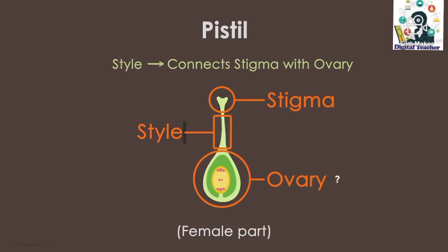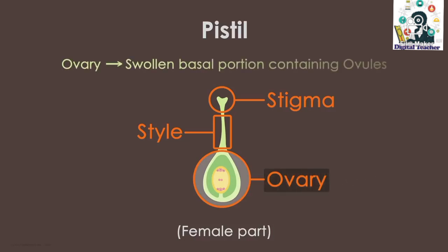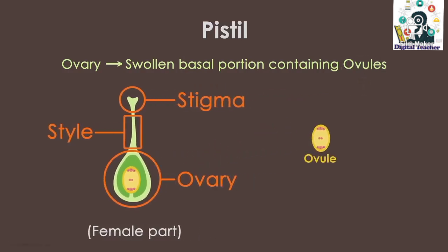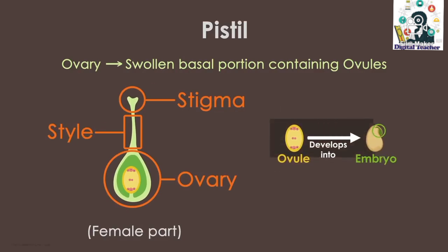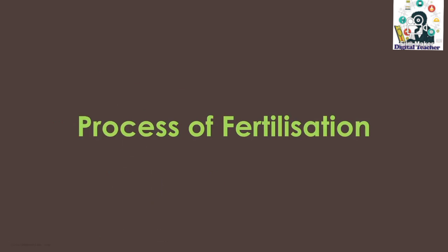So what is the ovary? The ovary is the swollen base of the pistil, and it contains the female gamete which develops into an embryo. This process is not as simple as it seems — it is a complex process. Let's get to know more about this process of fertilization in our next video.